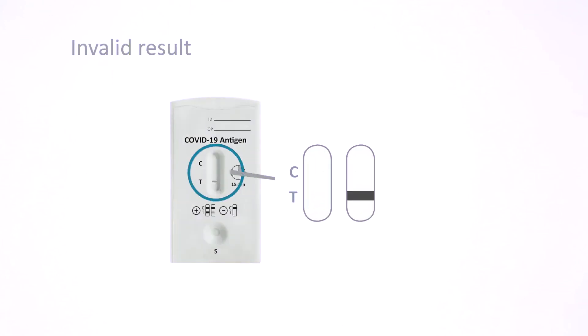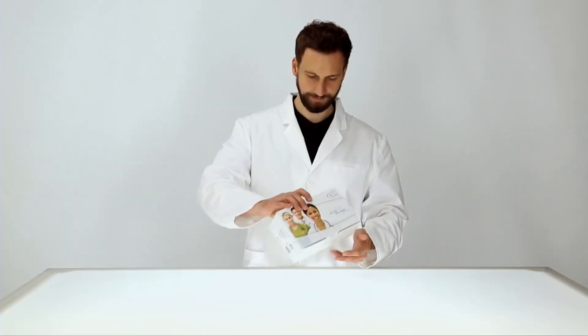The control line indicates that the test has been performed correctly and should always be present. If no control line appears, the result is invalid. Repeat the test with a new test cassette.